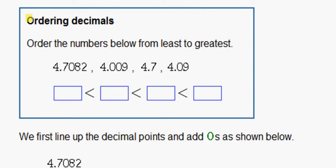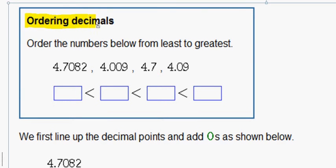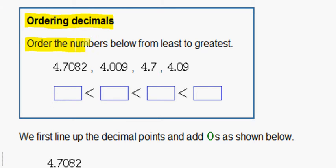In this problem we are ordering decimals. It is asking us to order the numbers below from least to greatest.